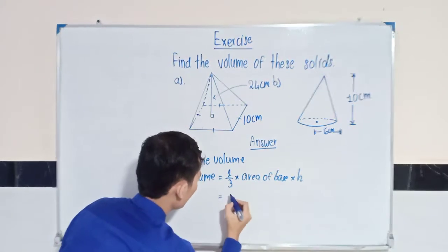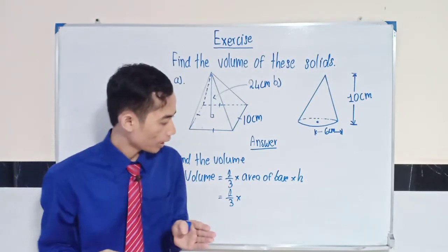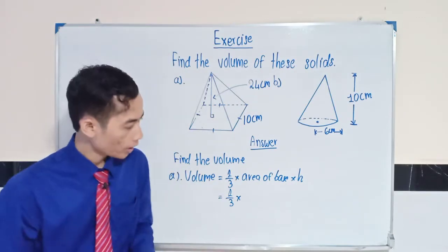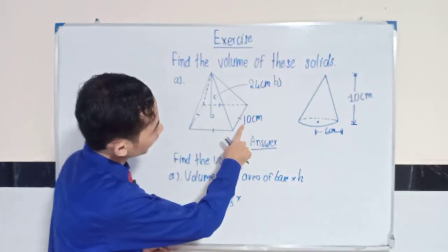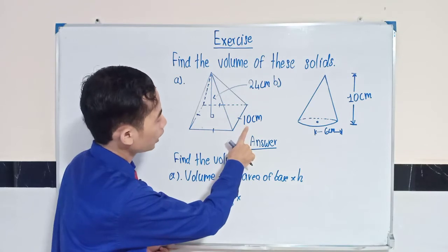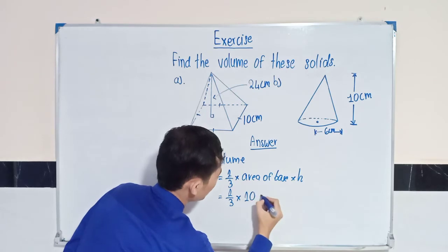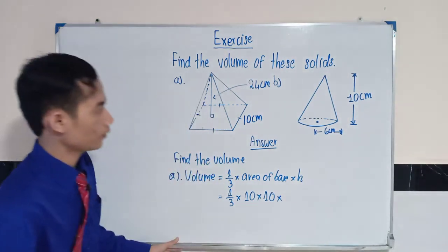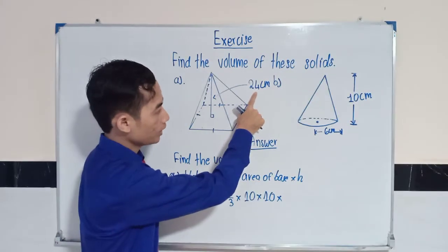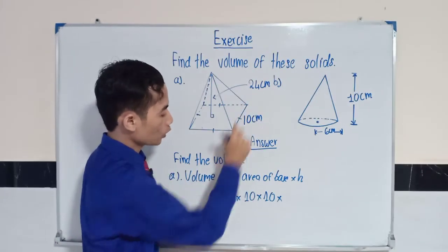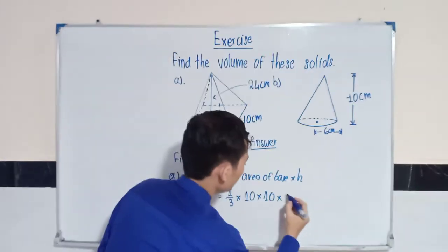Here is 1 over 3 times, and we know that area of square is equal to side times side. And the side is equal to 10 centimeters, so we can say 10 times height. But now height is equal to 24. So we can say 1 over 3 times 10 times 10 times 24.